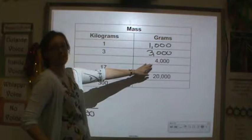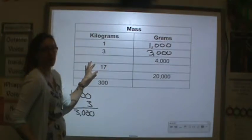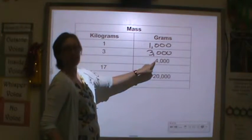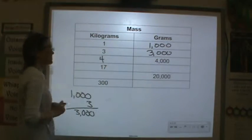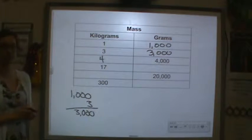Now, I have 4,000 grams. How many kilograms do I have? Well, I have 1, 2, 3, 4 groups of 1,000. I think we're starting to see the pattern.